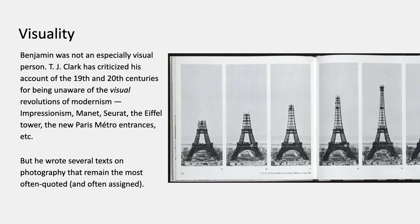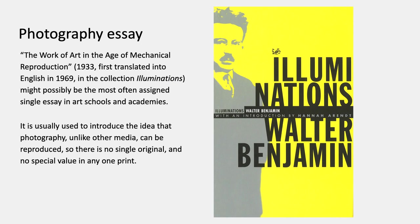Benjamin wasn't an especially visual person in general. The Arcades Project might have been intended to include photographs, but in the version he left it doesn't have any. The art historian T.J. Clark has criticized Benjamin's account of the 19th and 20th centuries because Benjamin was unaware of the visual revolutions of modernism — Impressionism, Manet, Seurat, the Eiffel Tower, the new Paris Metro entrances, and things like that. But Walter Benjamin did write several texts on photography that remain very often quoted and assigned.